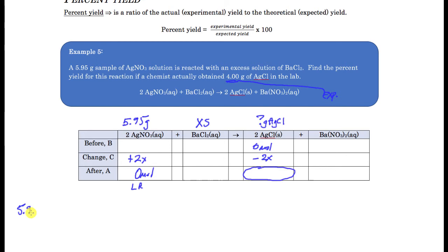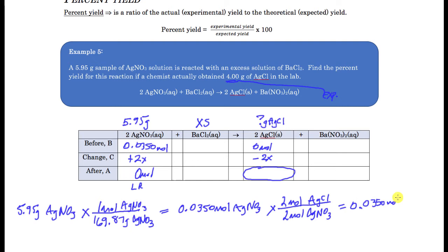I'm going to take that 5.95 grams and, like in previous problems, find the moles and then find the number of moles of silver chloride. Starting with 5.95 grams of silver nitrate and using the molar mass of silver nitrate, we get 0.0350 moles of silver nitrate. Because these react in a one-to-one ratio, that makes the calculation easy. If you're using the table, you don't have to show this calculation separately — you can directly enter that number if you recognize the one-to-one ratio.